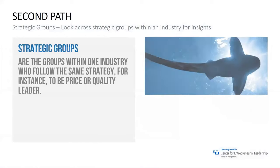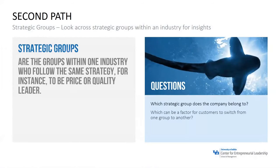The second path is to look across strategic groups within an industry for insights. Strategic groups are groups within the hospitality industry — staying on our example — that follow the same strategy, for instance to be a price or quality leader. For a B&B, you might look across to discount hotels with a very similar strategy, or to boutique hotels, and think about what that strategic group offers that you might be able to apply to your B&B.